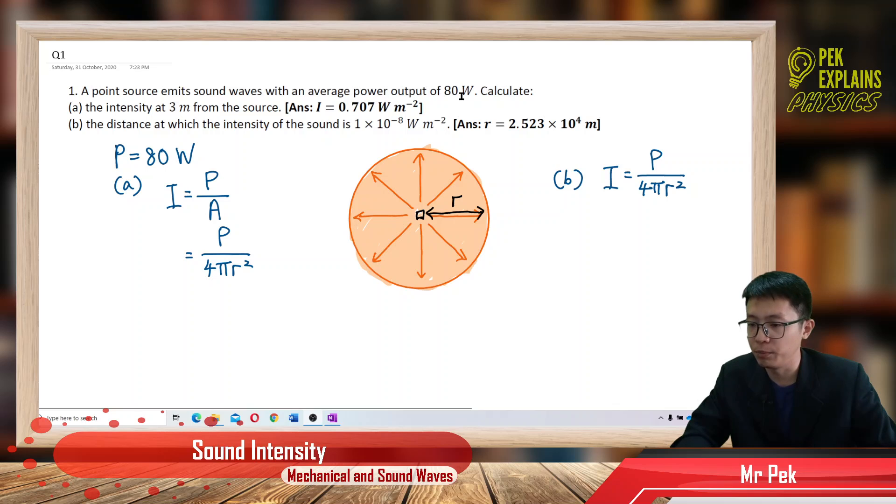Now I have the power output. I put here power output is 80 W. To find intensity 3 meters from the source. So I just write down the information we have. You have the power. You want to find intensity for this distance R meters from the source.